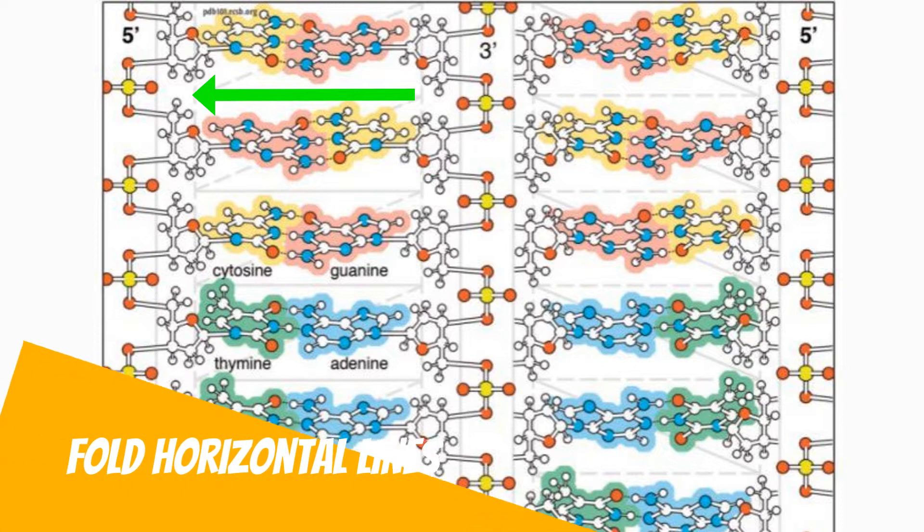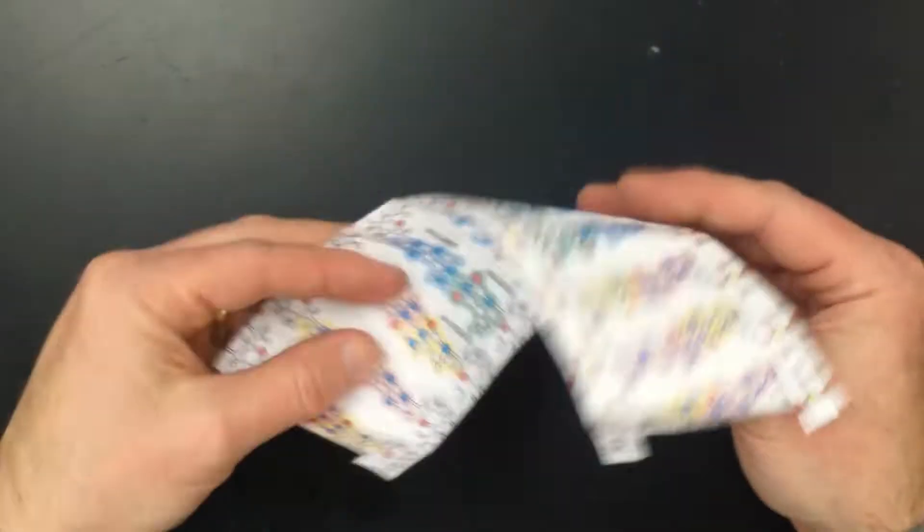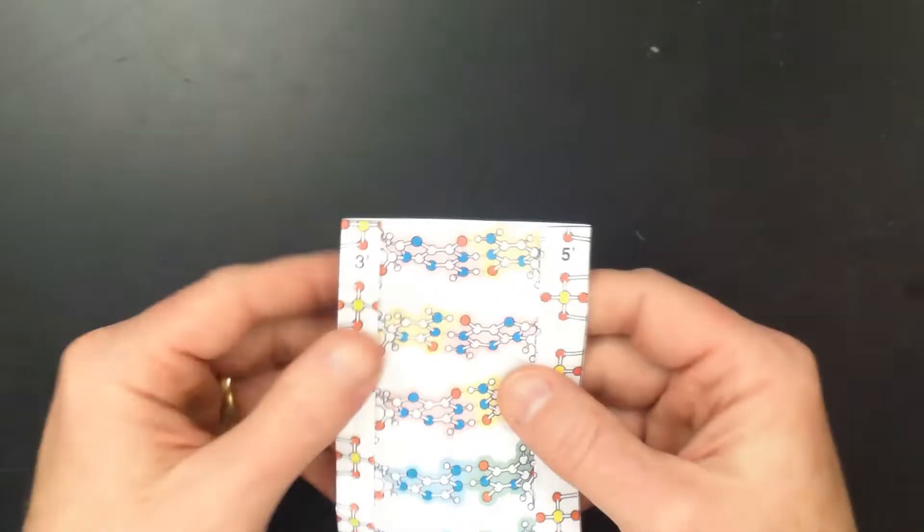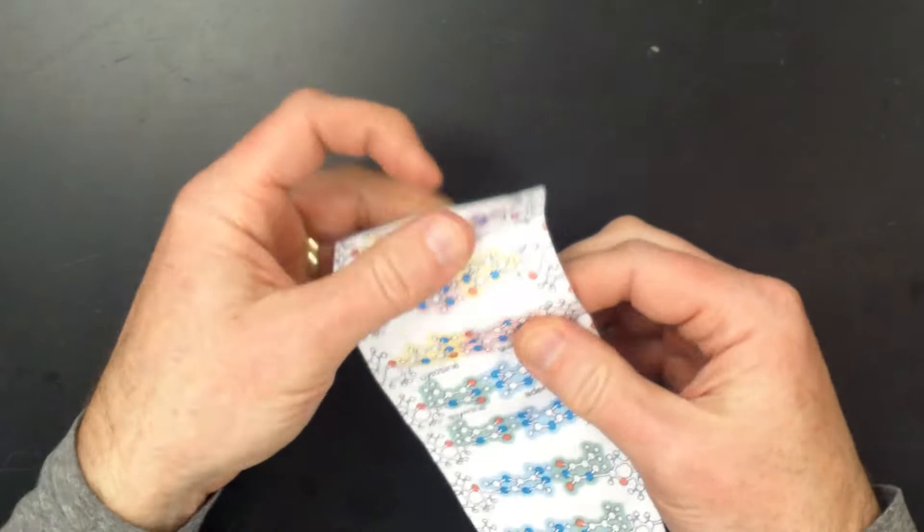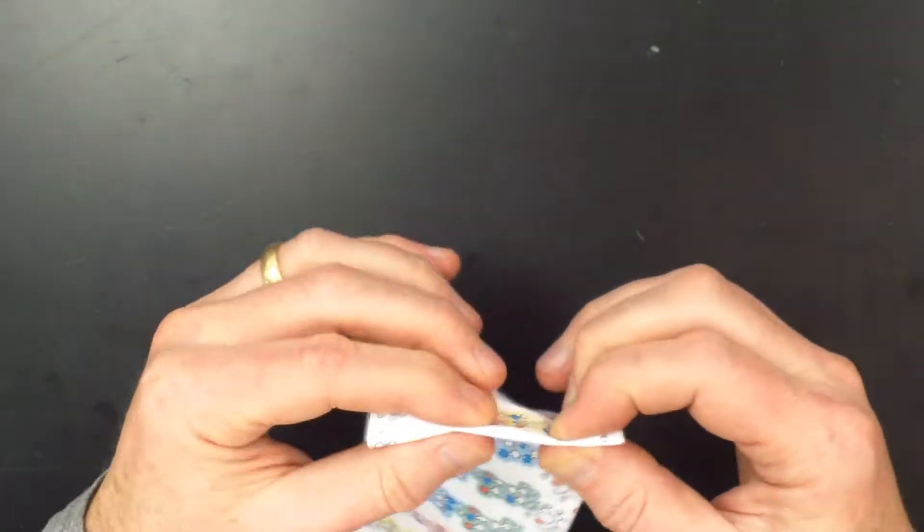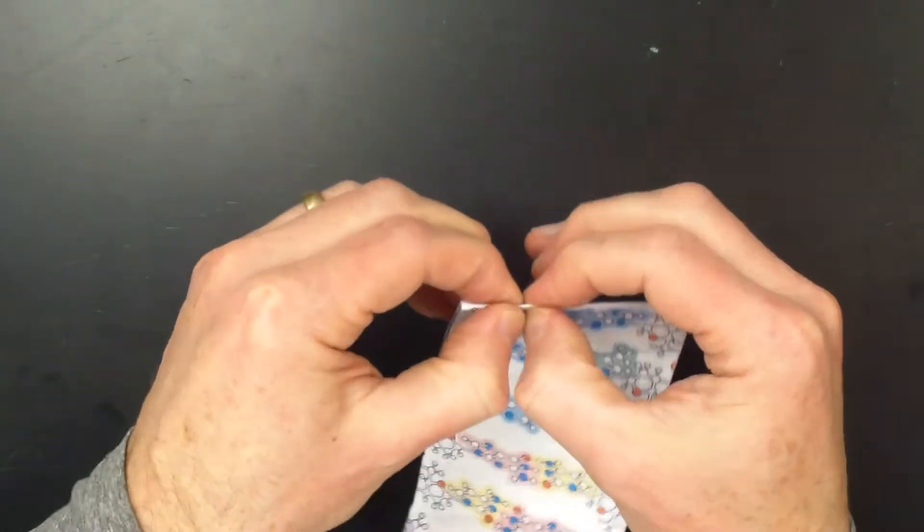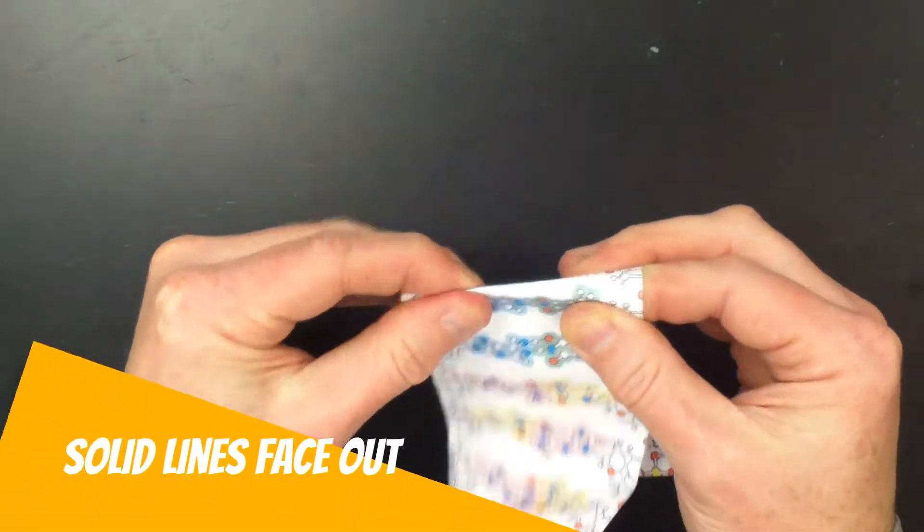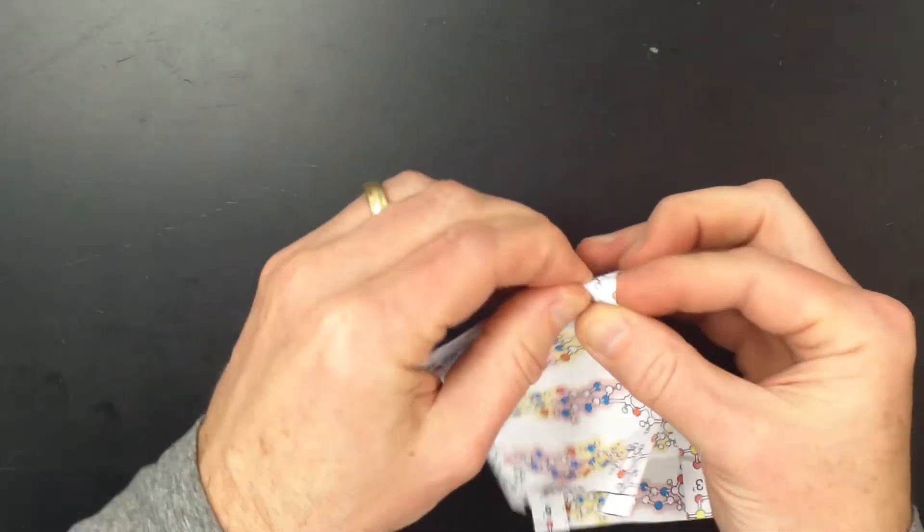Now fold the solid horizontal lines which will make up the steps of the ladder. If you flip the paper you will notice that the horizontal lines are solid on one side and dotted on the other side. Make sure to fold all these lines so solid lines are on the outside edge of the fold and dotted lines are on the inside edge of the fold.